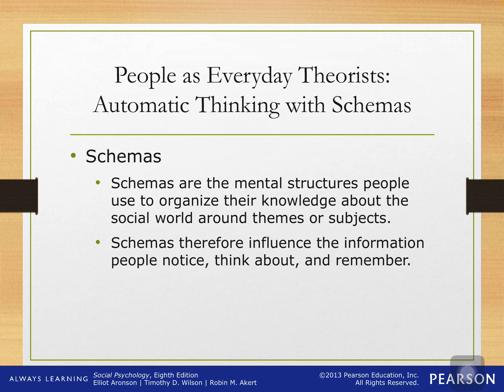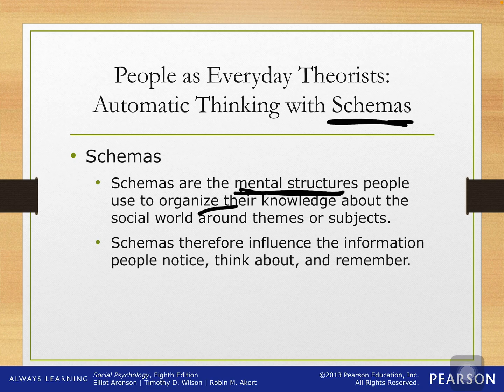With automatic thinking, we're going to talk about something called a schema. Schemas are very important to understand — you're going to hear about schemas for the rest of the class, all throughout social psychology. These are mental structures, shortcuts that we use to organize our information and knowledge about the world around us. Basically, it's our ability to put things in categories and boxes. Schemas come from a cognitive process that we are sort of born with.